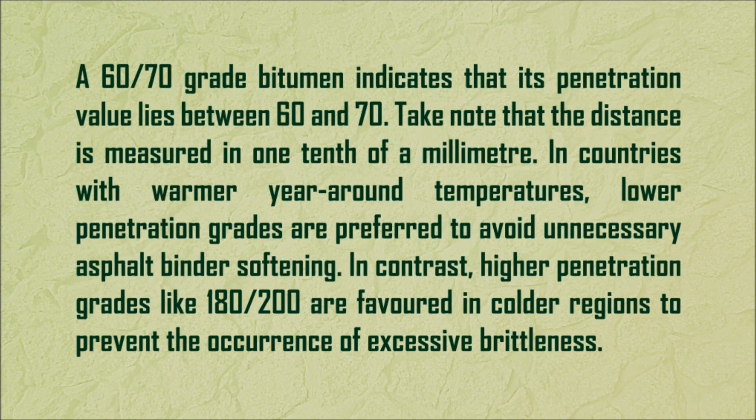A 60-70 grade bitumen indicates that its penetration value lies between 60 and 70. Take note that the distance is measured in one-tenth of a millimeter. In countries with warmer year-round temperatures, lower penetration grades are preferred to avoid unnecessary asphalt binder softening. In contrast, higher penetration grades like 180-200 are favored in colder regions to prevent the occurrence of excessive brittleness.